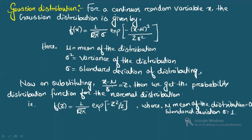First, let's start with the Gaussian distribution. For a continuous random variable x, the Gaussian distribution is given by: f(x) = (1 / √(2π σ)) · exp(−(x − μ)² / (2σ²)). Here x is the continuous random variable, μ is the mean, σ² is the variance, and σ is the standard deviation.